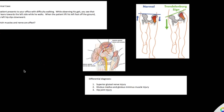Remember, do not confuse the innervations for the superior gluteal nerve and the inferior gluteal nerve. The inferior gluteal nerve innervates the gluteus maximus, whereas the superior gluteal nerve innervates two muscles: the gluteus medius and gluteus minimus, which serve to lift up the opposite hip to prevent it from dipping down.